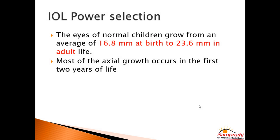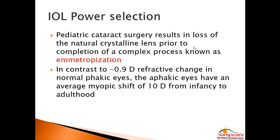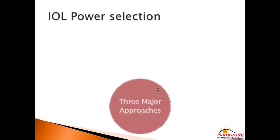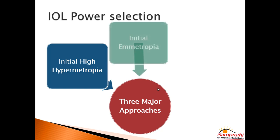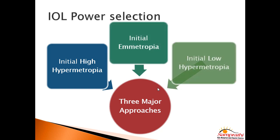Once you calculate the emmetropic power, deciding what power to implant is again a challenge, because the child's eye grows from 16.8 millimeters at birth to 23.6 millimeters as an adult, with most growth in the first 18 months. We are removing the crystalline lens before the complex process of emmetropization is complete. In a normal child there is only about 0.9 diopters of refractive change from infancy to adulthood, whereas in a child with pseudophakia the change is almost 10 diopters. We therefore use three major approaches: aim for initial hypermetropia, aim for initial emmetropia, or aim for low hypermetropia.